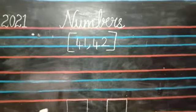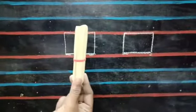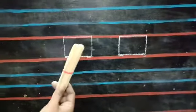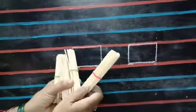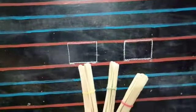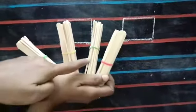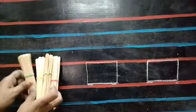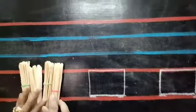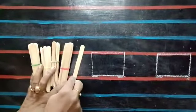Children, look at this bundle. How many sticks are there? 10 sticks makes 1 bundle. 10, 20, 30, 40. 40 and 1. We are going to add one more stick. 40 and 1. 41.